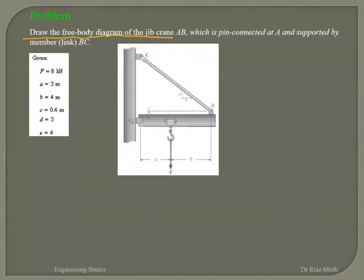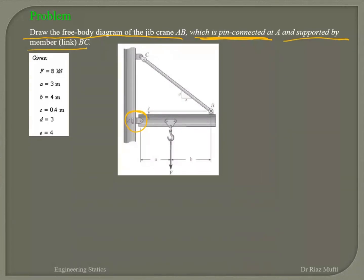Draw the free body diagram of the jib crane AB. That is the jib AB. We want to draw the free body diagram of this part, which is pin connected at A and supported by a member link BC.